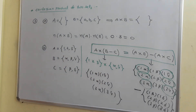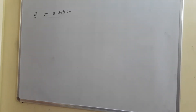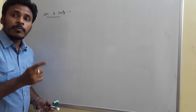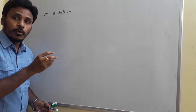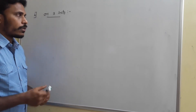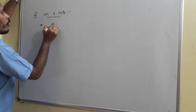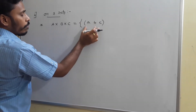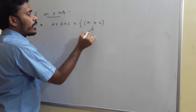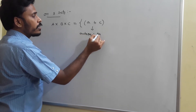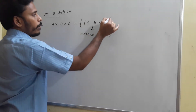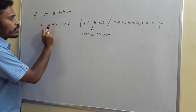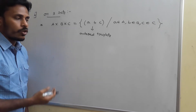For the Cartesian product of three sets, instead of ordered pairs you have ordered triplets. A cross B cross C is defined as the set of ordered triplets (a, b, c) such that a is from the first set A, b is from the second set B, and c is from the third set C. If you change the order of A, B, C you get different Cartesian products.